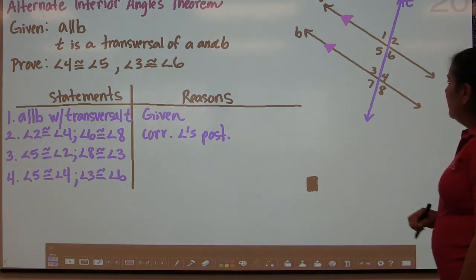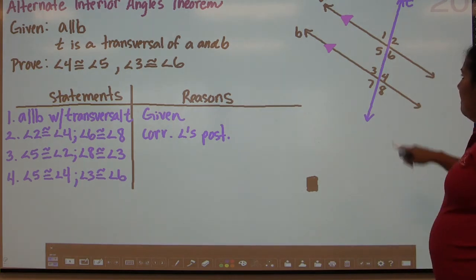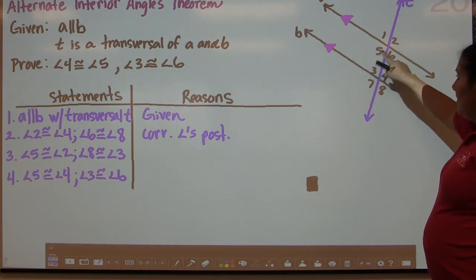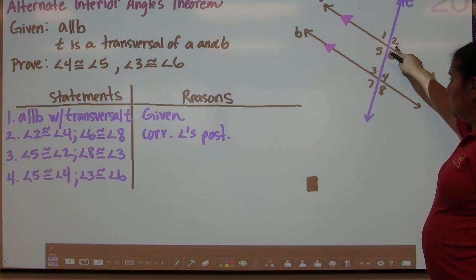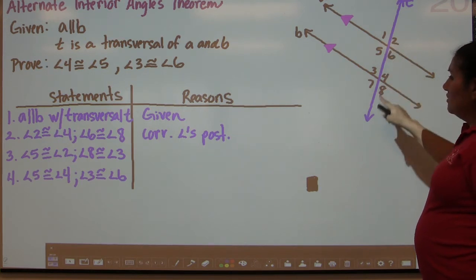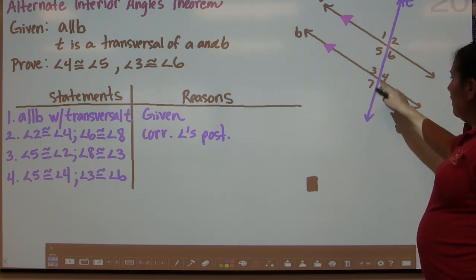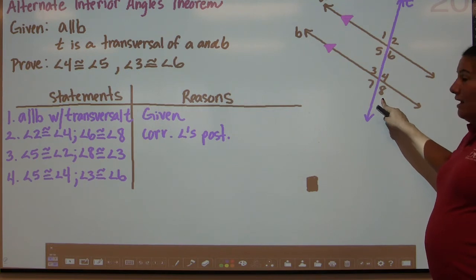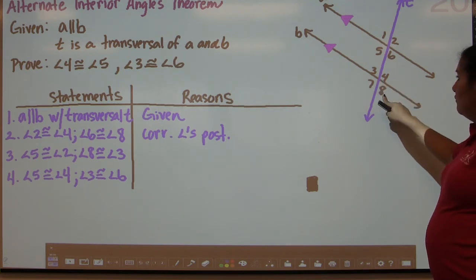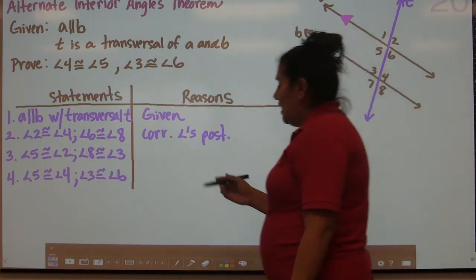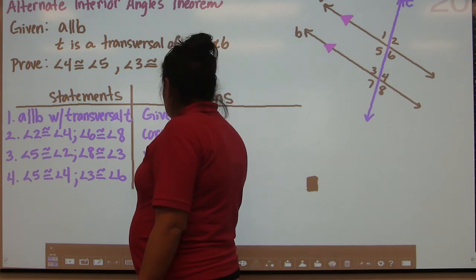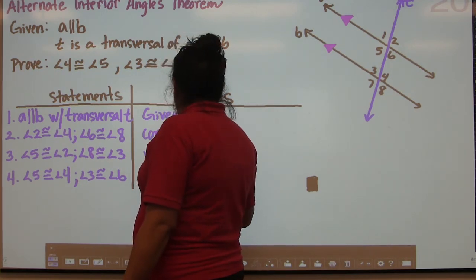In Step 3, angle 5 is congruent to angle 2 — if you look at the diagram, angle 5 and angle 2 are vertical angles. It also states that angle 8 and angle 3 are congruent, and if you look at the diagram, 8 and 3 are also vertical angles. So the reason for Step 3 is the vertical angles theorem.